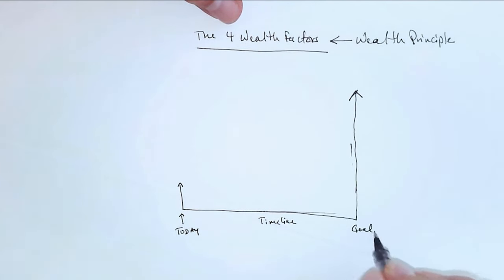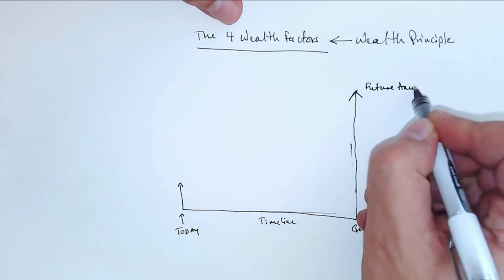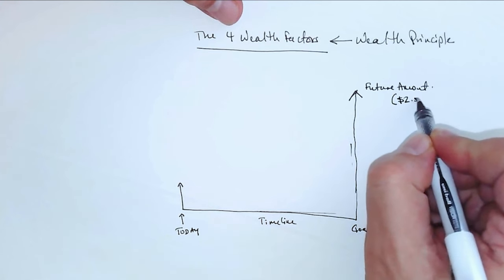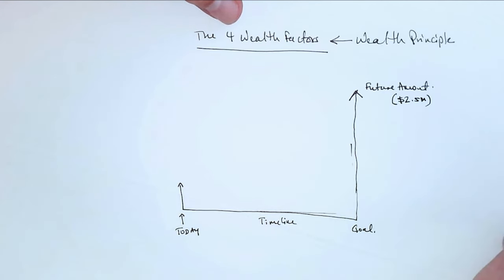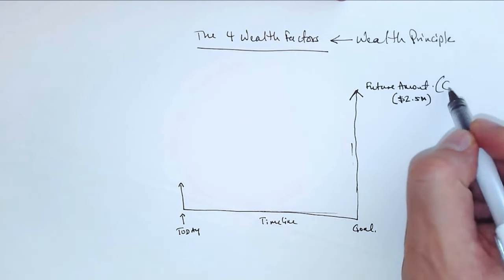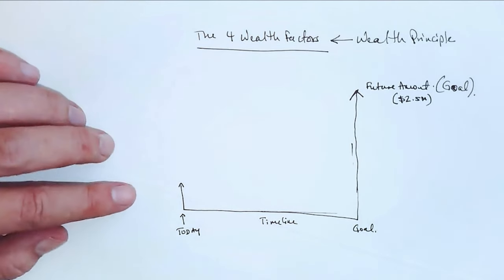This is your journey and this is your goal, right. This is your goal and your goal is to get to some future amount here. So let's just say the future amount is, as an example, two and a half million. Why did I pick this number? I just made it up. It's different for every single person. So what are the four factors?